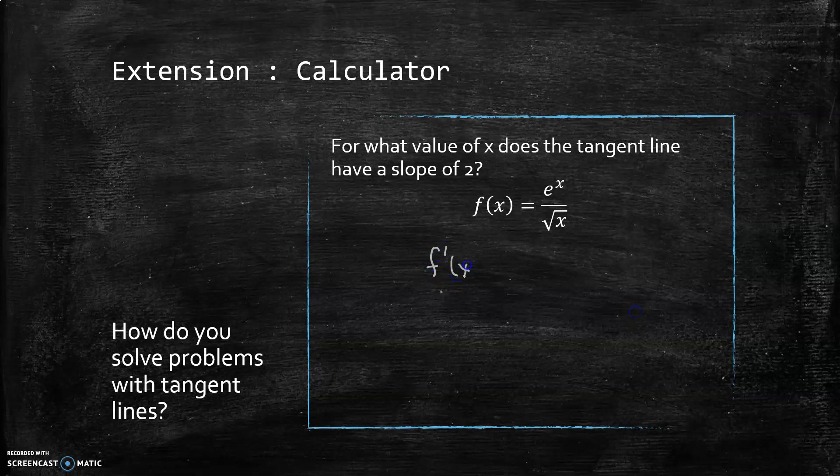What I would expect you to do for this calculator-active problem: first I would expect you to find the derivative yourself. I would expect you to say f'(x) equals low D high minus high D low all over the square of what's below. Once you have that, you don't really have to simplify it anymore. You need to grab a calculator and for the College Board, you're trying to find when is that mess equal to 2.